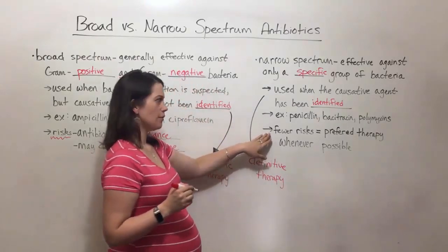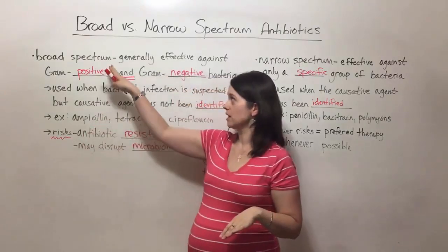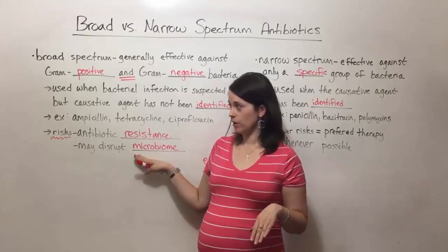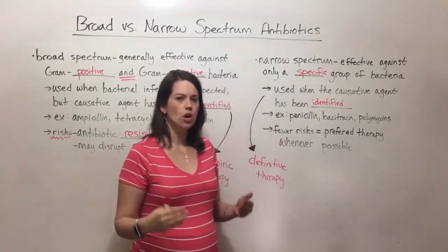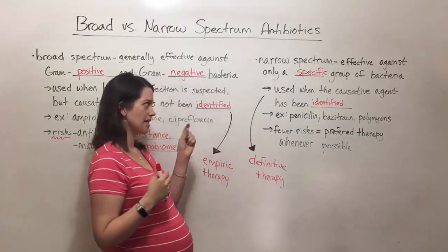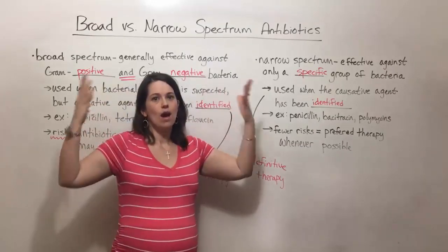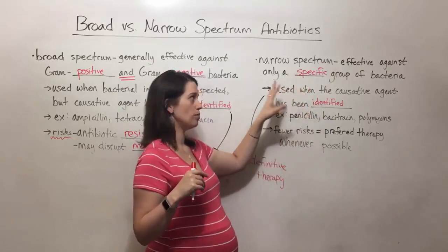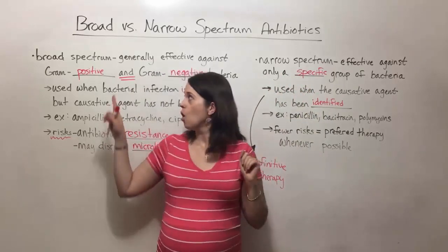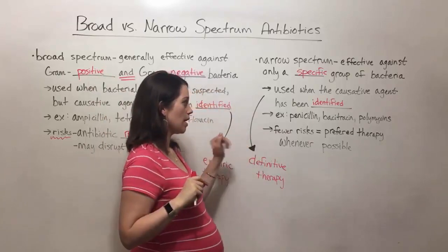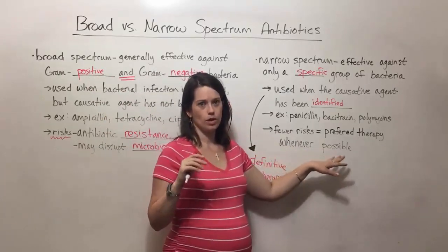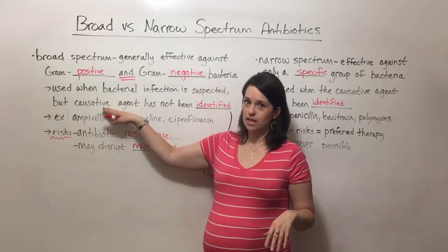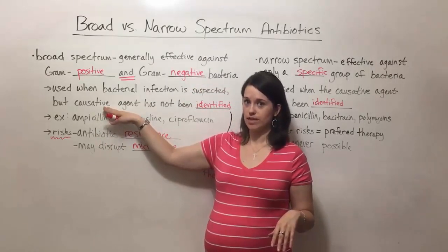Importantly, narrow-spectrum antibiotics have fewer risks compared to broad-spectrum antibiotics. They're not going to disrupt the microbiome, at least not nearly as severely, and antibiotic resistance is only a concern within the specific range of bacteria targeted rather than a very broad range. So this is the preferred type of therapy — prescribing a narrow-spectrum antibiotic whenever possible. There are times when a doctor is forced to use a broad-spectrum antibiotic because they don't know exactly what's causing the disease and the patient's symptoms are severe enough that something must be done immediately.